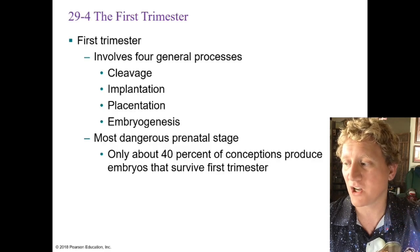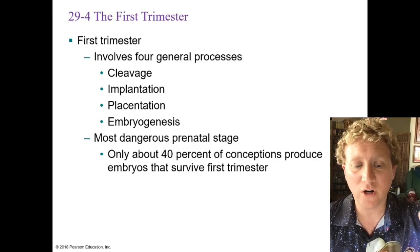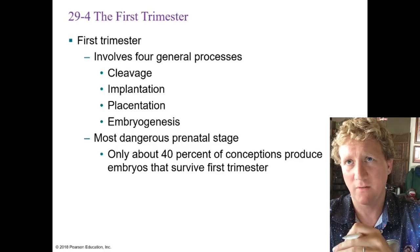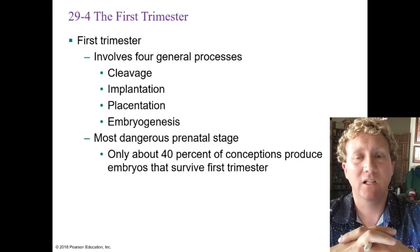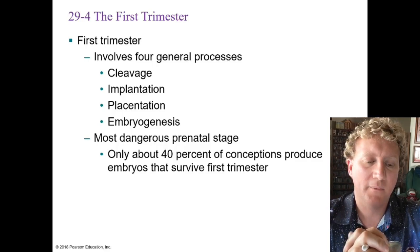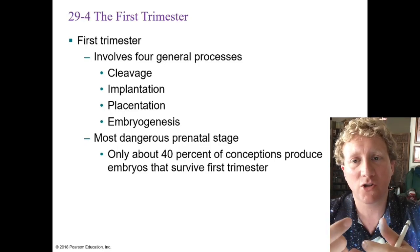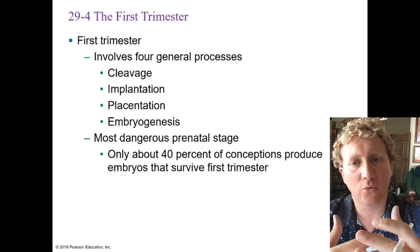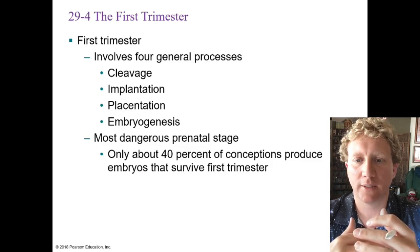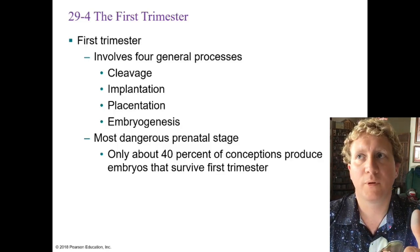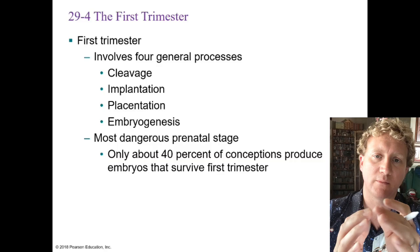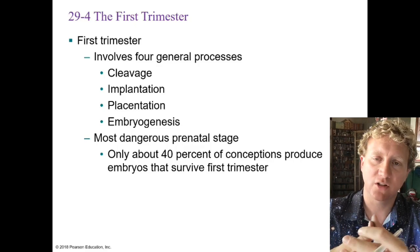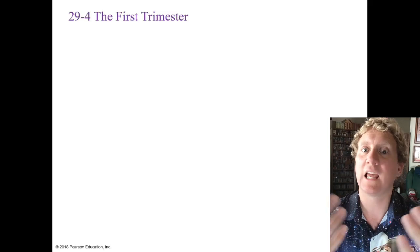This first trimester is important but also very dangerous. Only about 40% of conceptions produce embryos that survive it. This is why people have difficulty conceiving and carrying babies to term — a lot of stuff can happen, and a small change early on can have catastrophic effects. Many things can go wrong leading to a non-viable embryo. That's also why people typically wait during the first trimester before announcing a pregnancy — they wait until certain milestones are met.